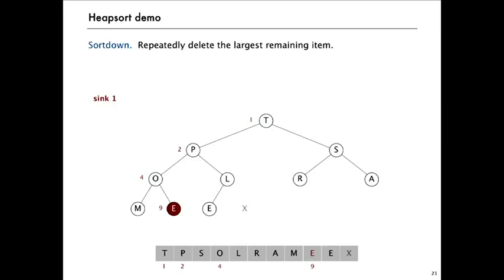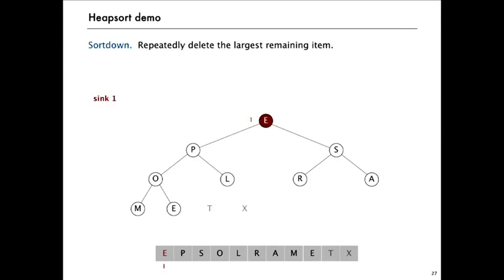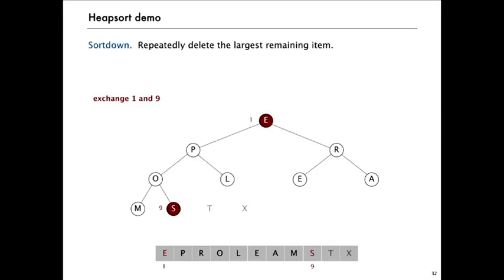Now the next largest element is at the root of the heap. We do the same thing: exchange it with the last element in the heap, so T is now in its final position in the sorted array. We take it off the heap. Now we have a heap with nine elements and two elements already in their final position. This one's not heap ordered, so we exchange it with the largest of its two children — promoting S and then R. Now it's heap ordered. That's the end of two steps in Heapsort. We just keep going: pulling off the largest element from the heap, exchanging it with the element at the largest position, bringing it into its final sorted position, then adjusting with the sink operation.